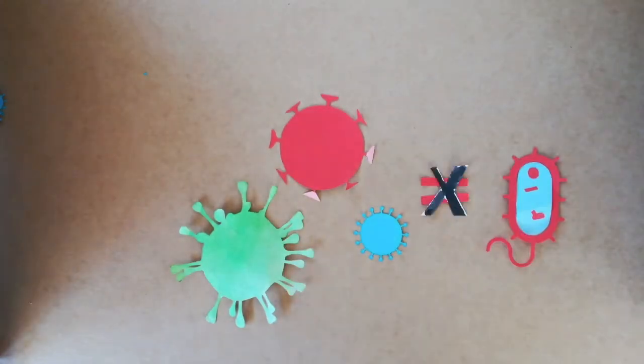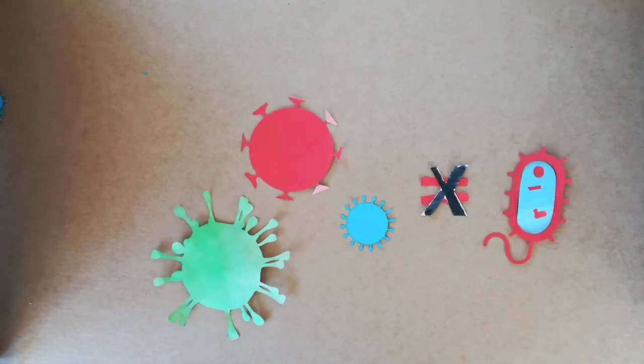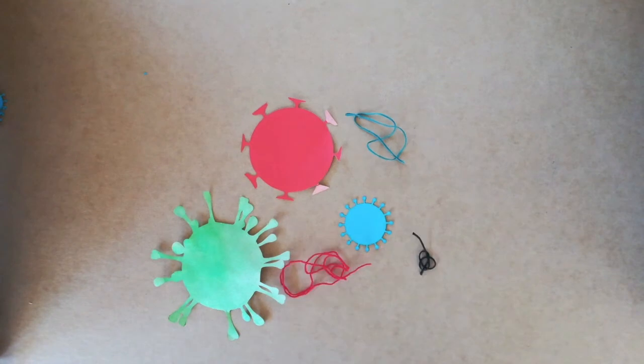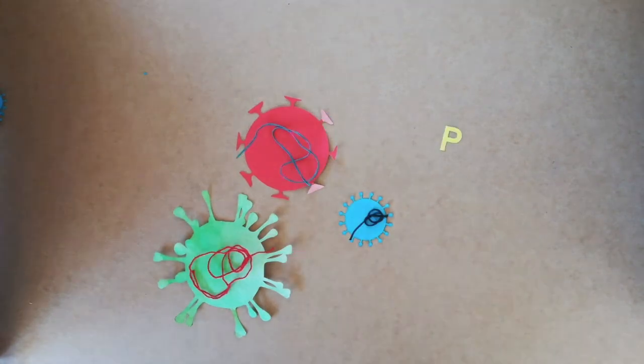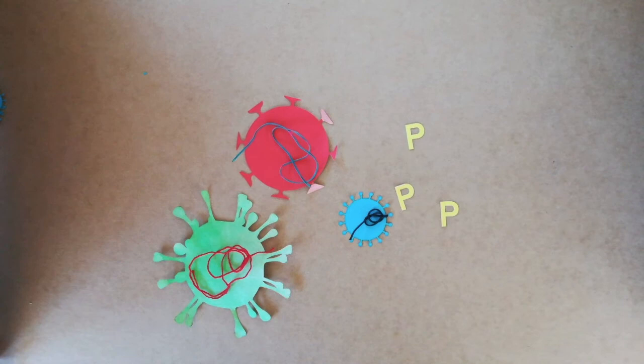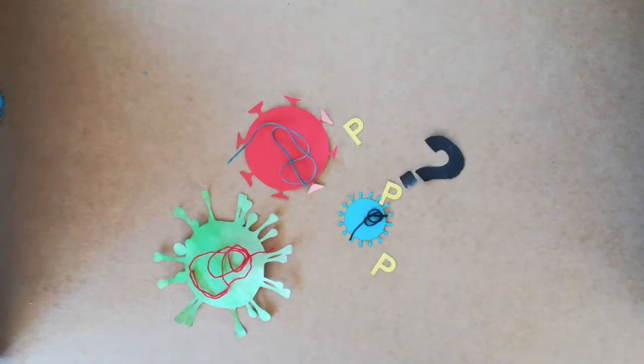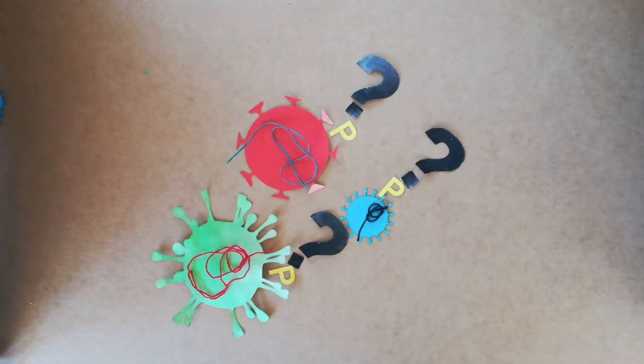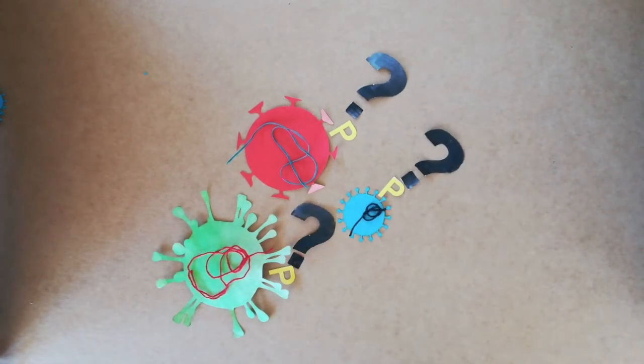Viruses are not cells. They are just a piece of DNA or RNA in a cover. Antibiotics attack the processes of cell reproduction. As a virus is not a cell, and cannot reproduce on its own, antibiotics cannot kill viruses.